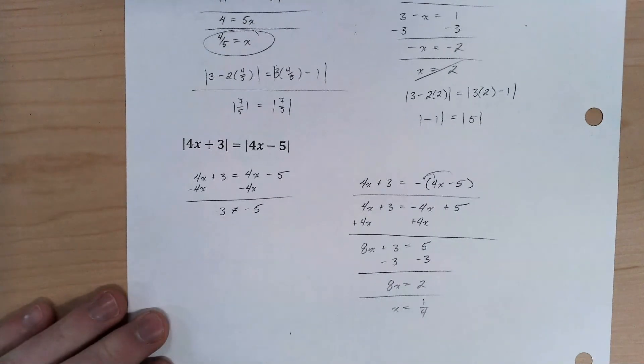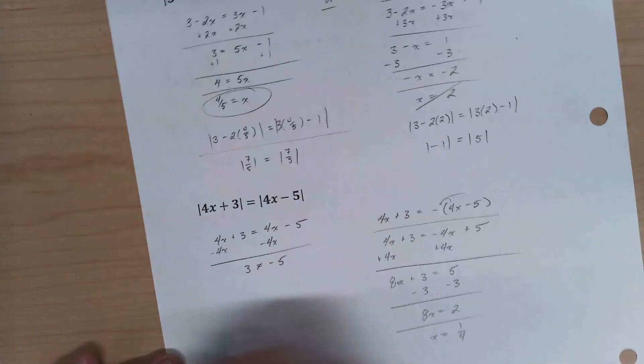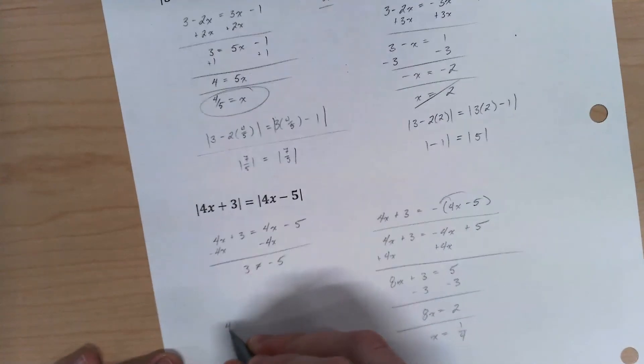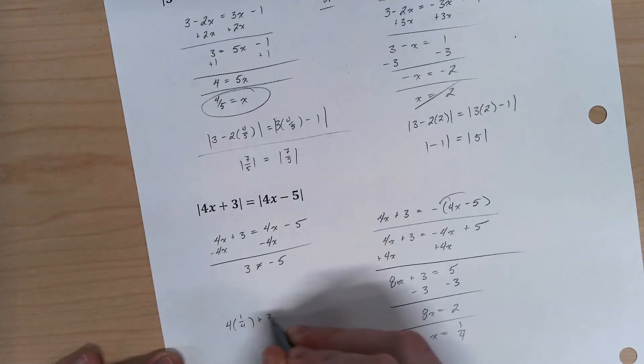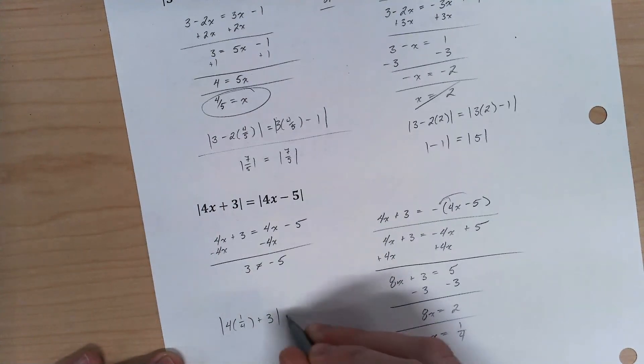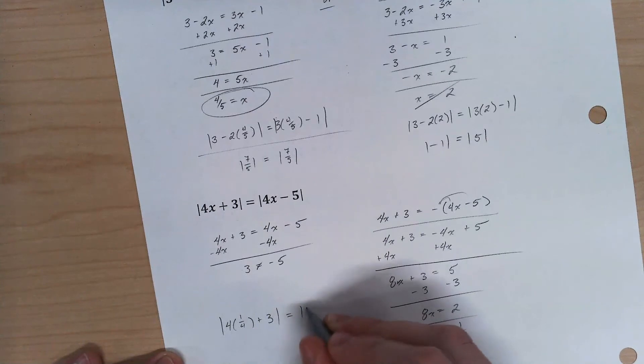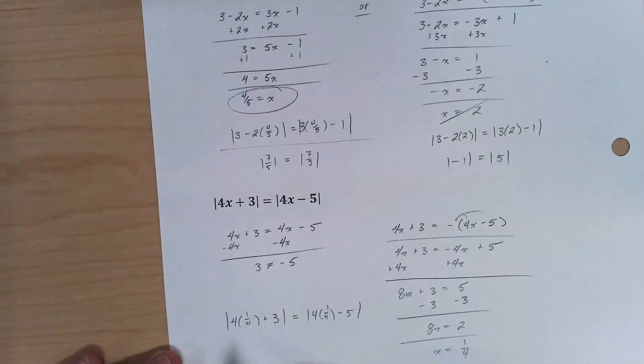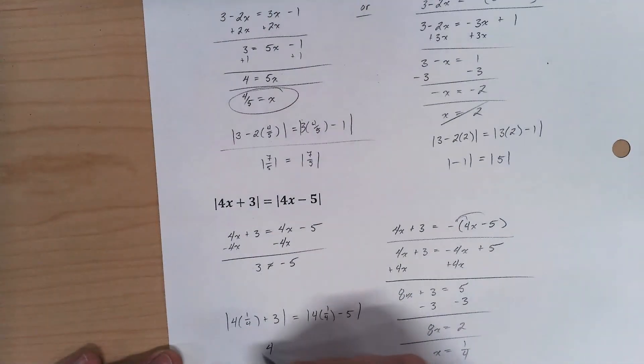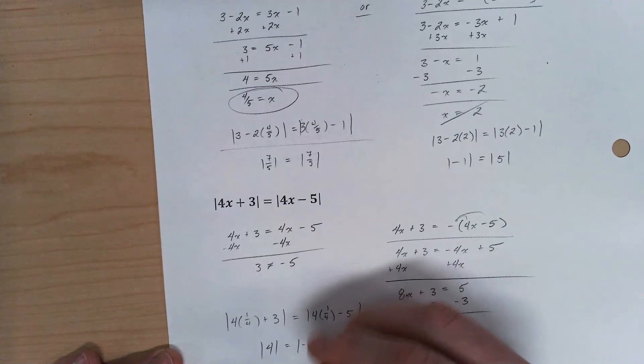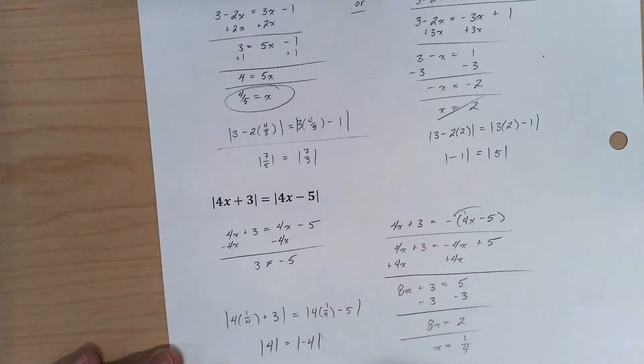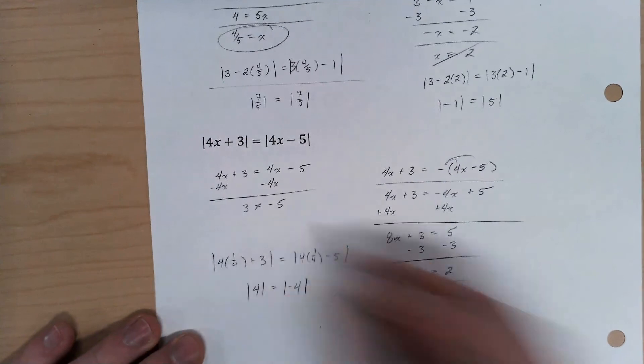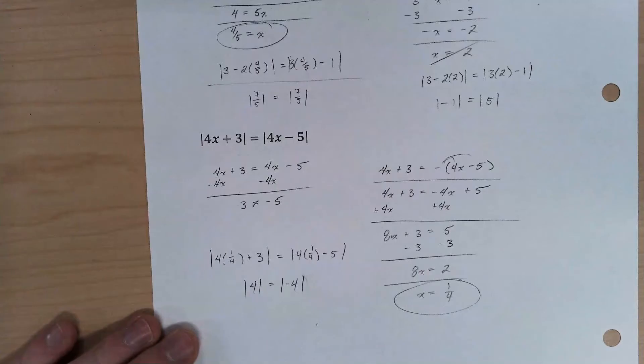But I still need to check this one out just like I had to check up here. I'm going to say 4 times 1 over 4 plus 3 equals absolute value of 4 times 1 over 4 minus 5. So you have a 1 plus 3 is 4, 1 minus 5 negative 4. But the absolute value of negative 4 and 4 are the same thing. So this is a perfectly valid solution.